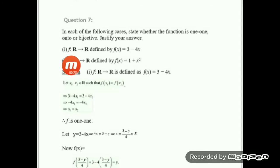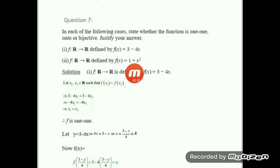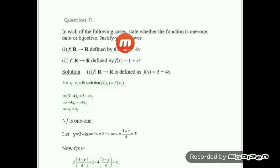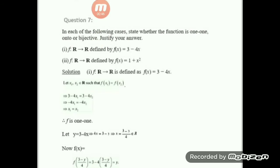There are two parts of the question. Part one is f from R to R defined by f(x) = 3 minus 4x, and the second one is f from R to R defined by f(x) = 1 plus x squared. For this function, we have to show whether it is one-to-one, onto, or bijective.